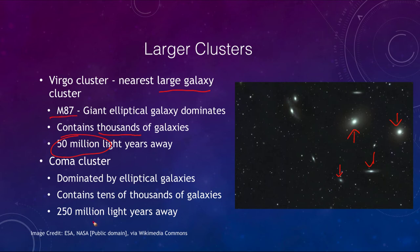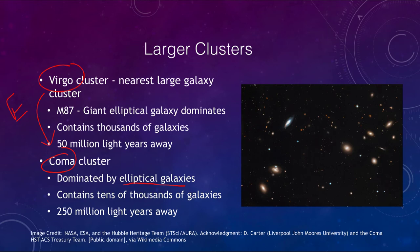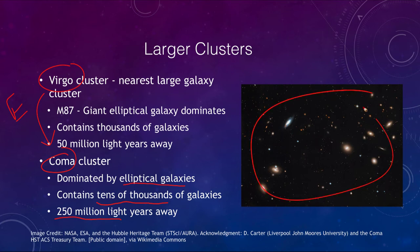M87, the giant elliptical galaxy, is the dominant galaxy toward the center of the Virgo cluster. There are also even larger clusters — the Coma cluster is even larger and is also dominated by elliptical galaxies. This is an interesting difference: our local group had spiral galaxies as its three most prominent members, whereas the Virgo and Coma clusters are dominated by elliptical or E-type galaxies. The Coma cluster contains tens of thousands of galaxies and is 250 million light years away.